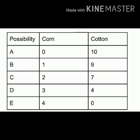If the economy utilizes its entire resources to produce corn, it can produce a maximum of four units of corn. This can be seen with possibility E. The economy can choose possibility B, where it produces one unit of corn and nine units of cotton, or possibility C with two units of corn and seven units of cotton.